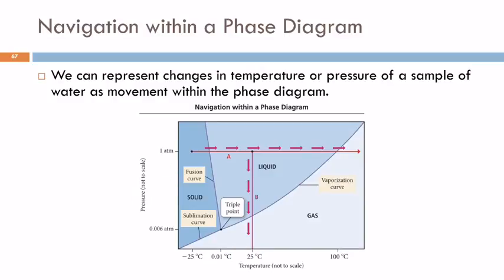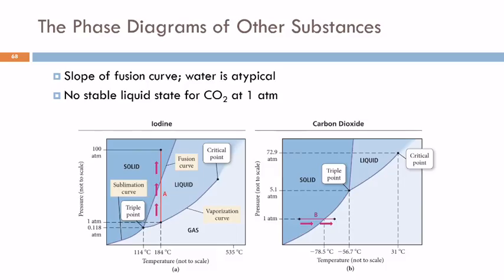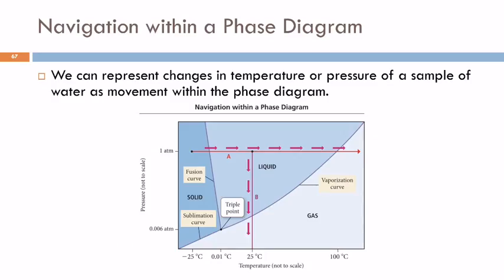Different substances have very different looking phase diagrams. Here we've got iodine and carbon dioxide. The slopes of these lines and where they are relative to the markings on pressure and temperature scales are very different. If we go back to water, water's fusion curve has a negative slope—it gets more negative as you go up.